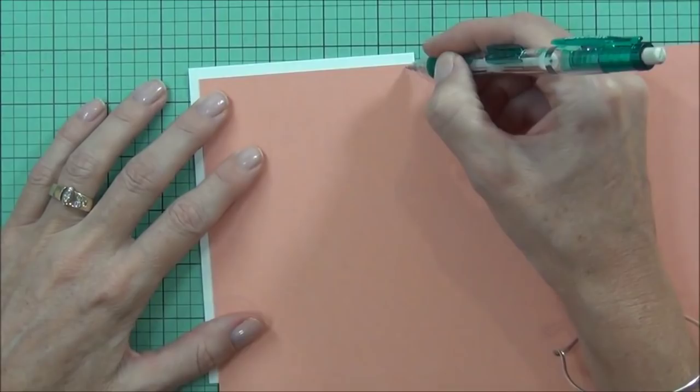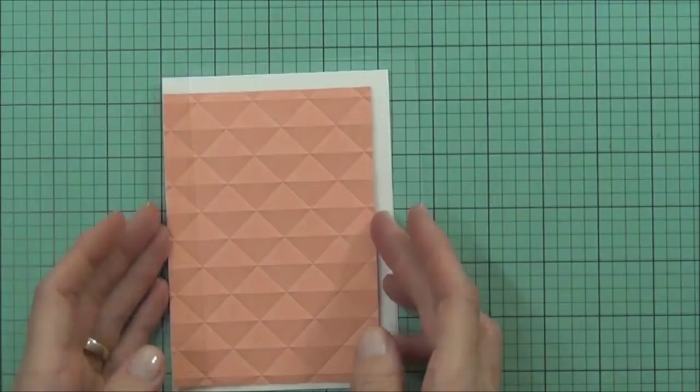Hi, it's Therese and I'm back to assemble my card for Altenew. I've got a piece of peach cardstock and I'm cutting it down so there's a white border on my card.